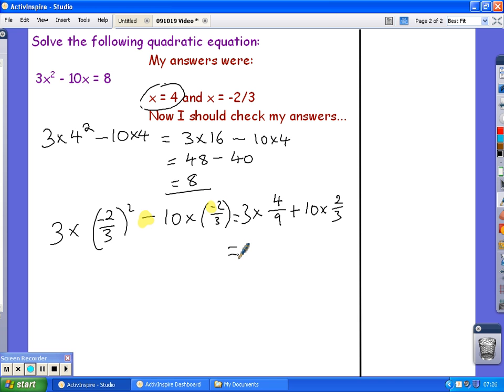3 times 4 ninths. 3 lots of 4 ninths. Well, if you're confident with cross-cancelling, you can see that that's 4 thirds. Or, if you need to, you can write that as 12 ninths. 3 lots of 4 ninths is 12 ninths. Plus, 10 times 2 thirds. Well, that's 20 thirds. And I should be able to cancel 12 ninths down. Dividing both top and bottom by 3, I get 4 thirds. And now my fractions have a common denominator. And I can get 24 thirds. And 24 thirds is 8.